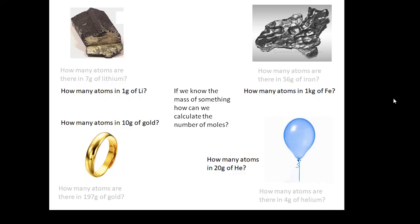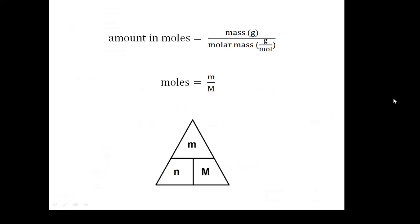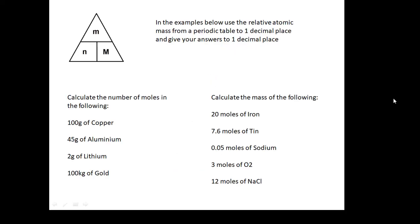If we know the mass of something, how can we calculate the number of moles? Here's a little triangle for you. Little m is the mass. Little n is the number of moles. And big M is the relative atomic mass or the molar mass. So learn this triangle. Then use this triangle to work these out. In the examples below, use the relative atomic mass from a periodic table to one decimal place and give your answers to one decimal place. We're going to be doing one decimal place in all our calculations from now on. Calculate the number of moles in the following and calculate the mass of the following. If you're in my class, this would be a homework. I'm not going to tell you the answer.